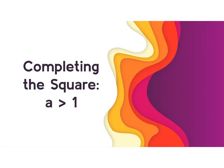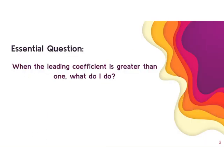All right, you guys, in your last set of notes, we completed the square when the coefficient on our x squared, the a coefficient, was equal to 1. So now we're going to be getting into values where we are actually greater than 1. So our essential question for this set of notes, when the leading coefficient is greater than 1, what do I do?